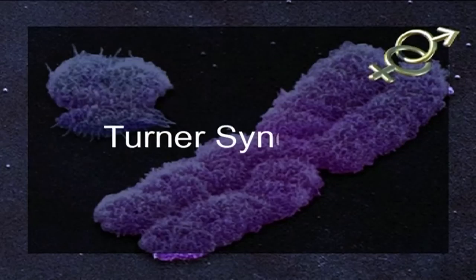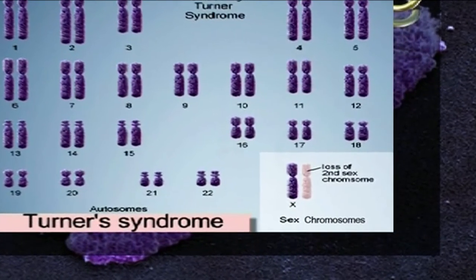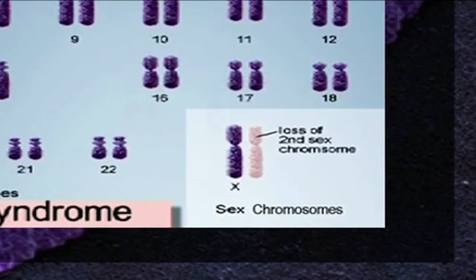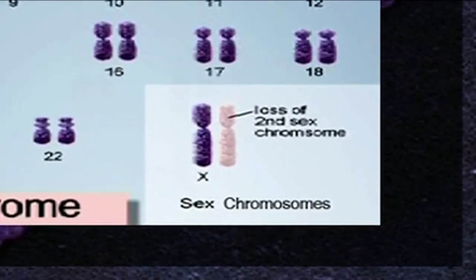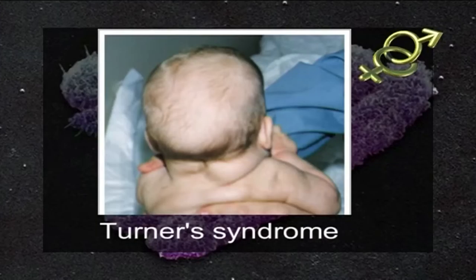Number two is Turner syndrome. This results when a female cell has one normal X chromosome and the other sex chromosome is missing or altered. The missing genetic material affects development and causes the features of the condition, including short stature and infertility. About half of individuals with Turner syndrome have monosomy X — that is, 45 X — which means each cell in a woman's body has only one copy of the X chromosome instead of the usual two copies. Turner syndrome can also occur when one of the sex chromosomes is partially missing or rearranged rather than completely missing.